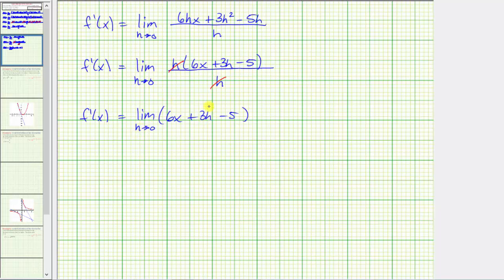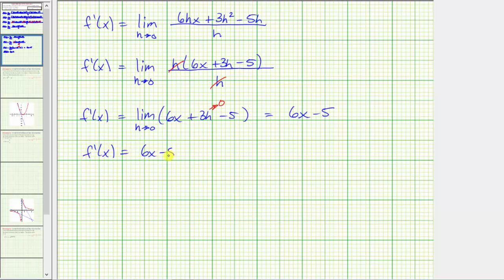As h approaches zero, three h approaches zero. Therefore this limit is just equal to six x minus five, and we have our derivative function f prime of x equals six x minus five.